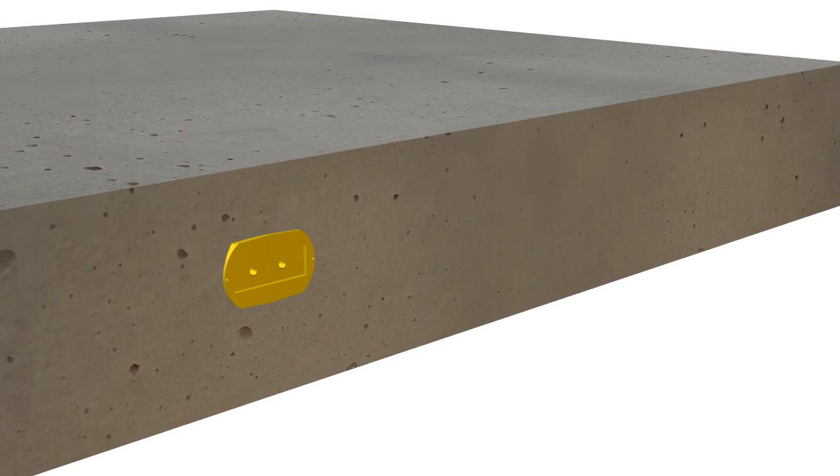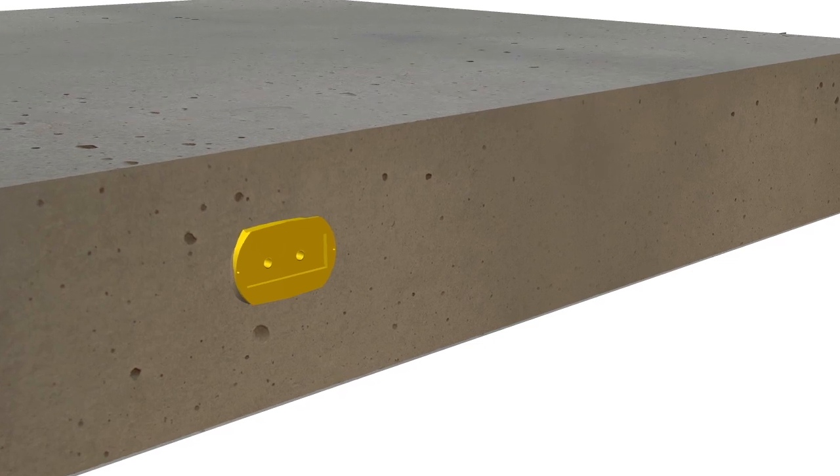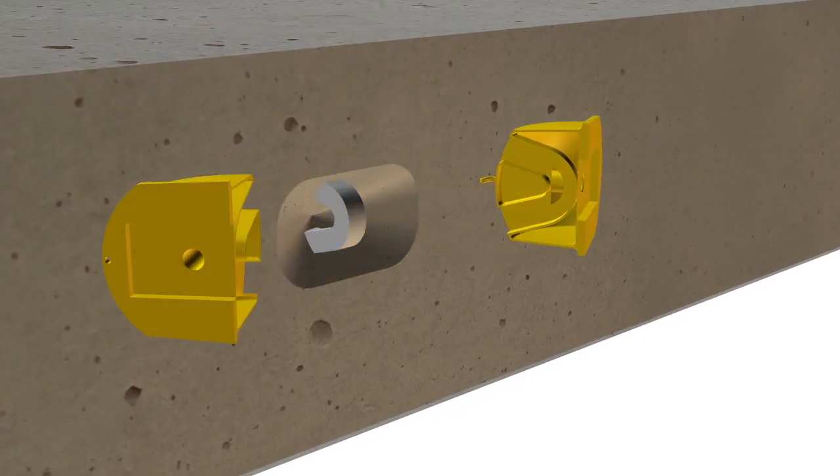Once the concrete is poured and reaches desired strength, remove the forms and strip the void former to expose the anchor.